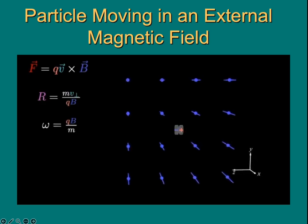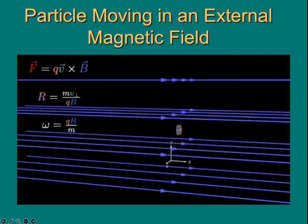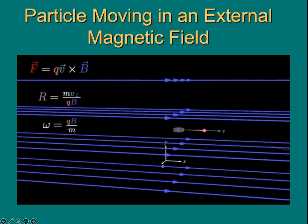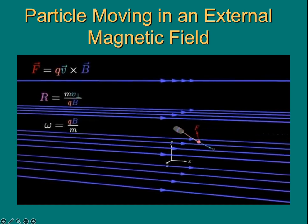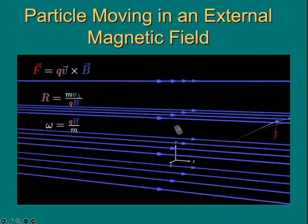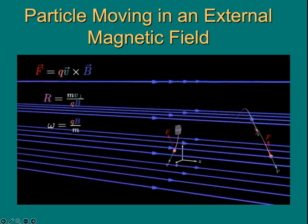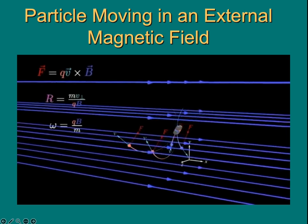Returning to the more general 3D case, the net motion of the charges will be determined by the parallel and perpendicular components of the charge velocity relative to the magnetic field. The component of velocity parallel to the magnetic field determines the part of the motion along the magnetic field lines. This part of the motion is at a constant velocity. The component of velocity perpendicular to the magnetic field lines determines the circular motion around the magnetic field lines. The net result of these two motions is a helical motion, where the charges spiral around the magnetic field lines.